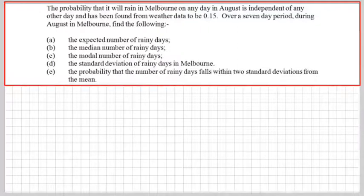I cooked up a little problem for you. It's about the probability that it will rain in Melbourne, Victoria, Australia on any day in August. Apparently, according to weather data, this probability is independent of any other day and has been found to be 0.15. Now, over a seven day period during August in Melbourne, find the following: